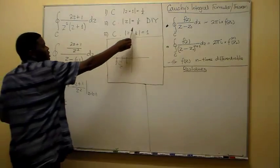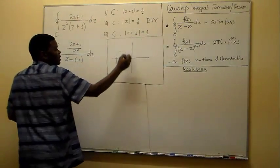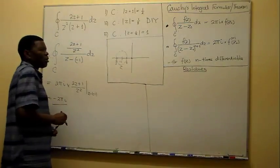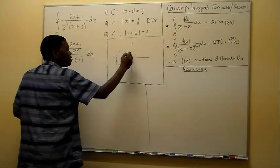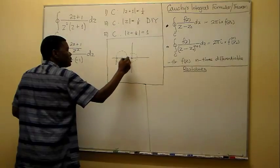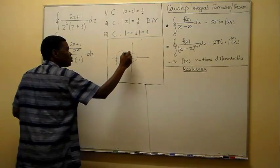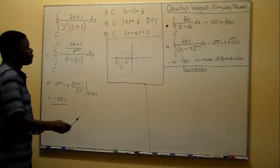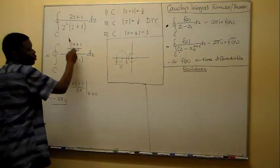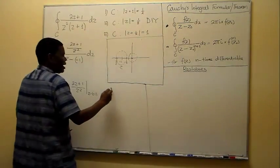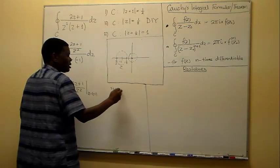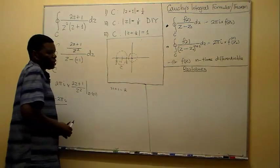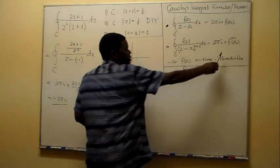If you look at this circle centered at the origin with radius one-eighth, the only pole inside the circle is going to be z = 0. In that case we're going to have a repeated pole where n + 1 = 2.